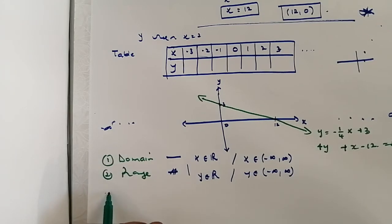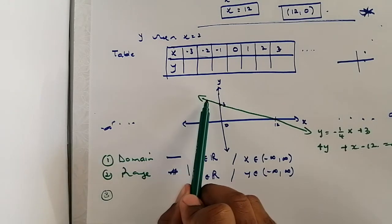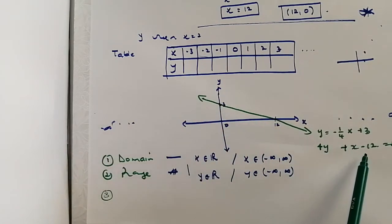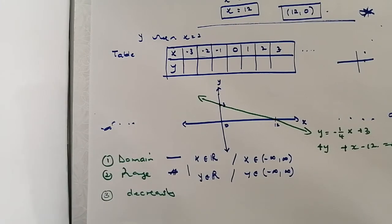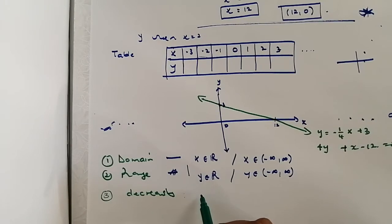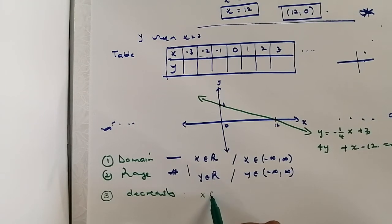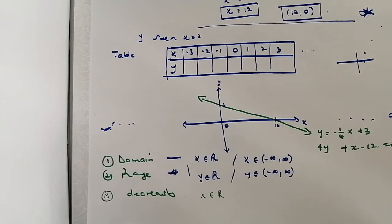One last thing they may ask is whether the function is increasing or decreasing. This function is decreasing — it decreases everywhere. So this is a decreasing function, and if they ask for the values of x where it is decreasing, the answer is x ∈ ℝ — it's decreasing everywhere.